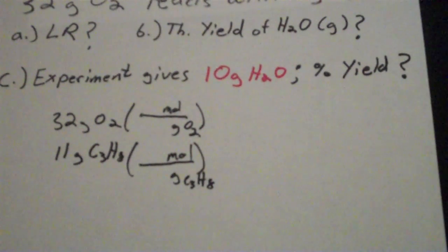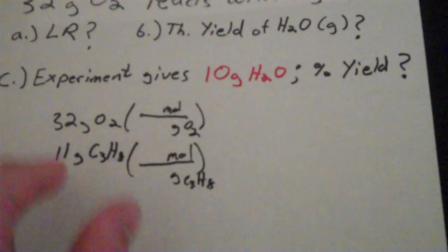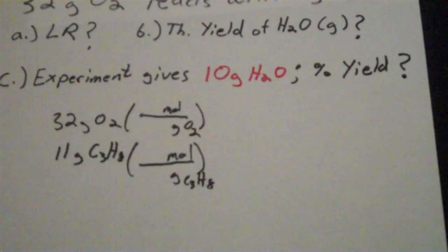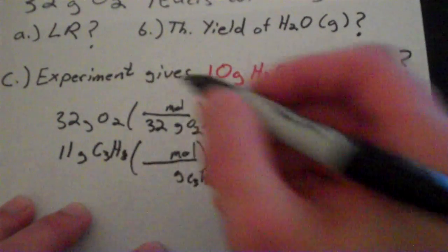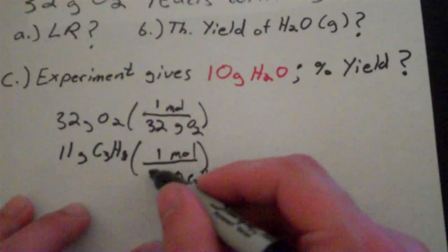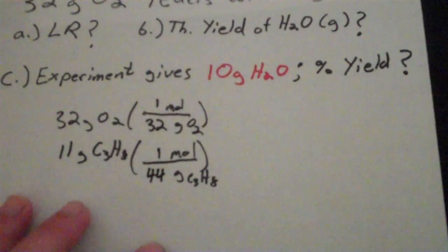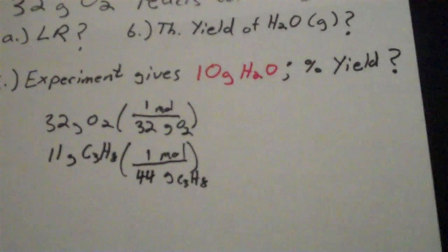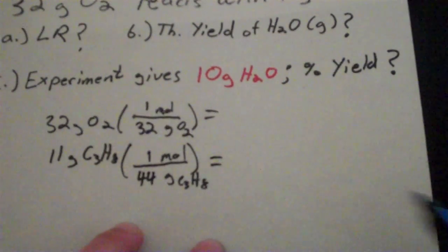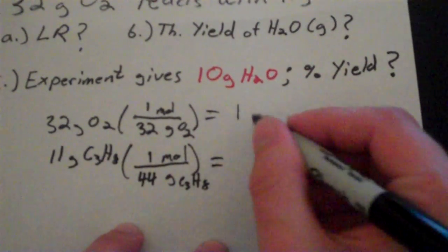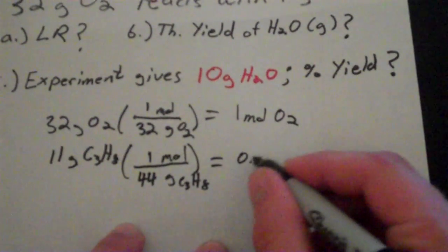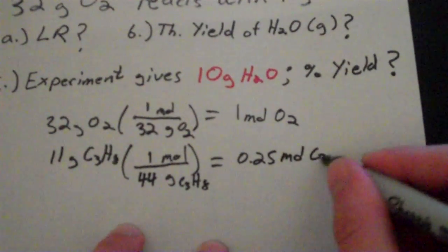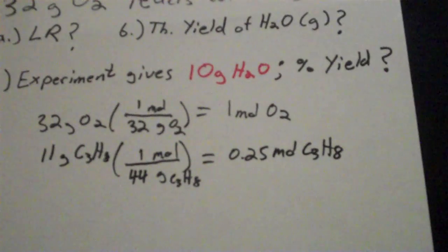From the periodic table, you can look up how many of each atom you have, multiply it by the molecular weight of that particular element, and then add those together. I've already done that. So O2 is 32 grams per mole, and propane is 44 grams per mole. So that gives me one mole of O2, and then I have 11 over 44, so that's 0.25 moles of propane.